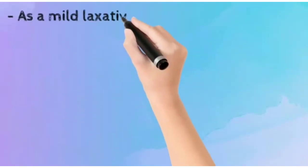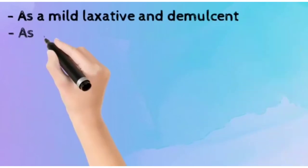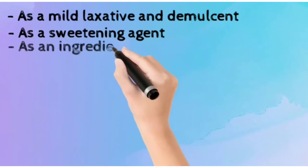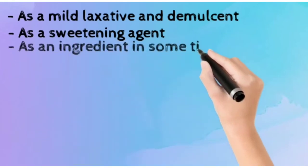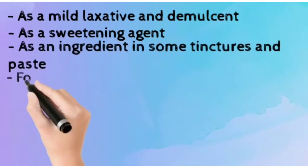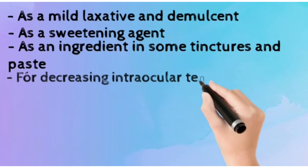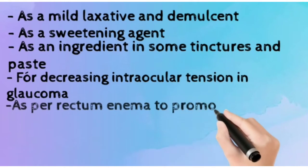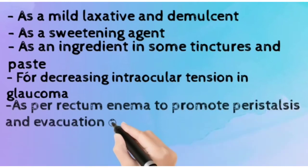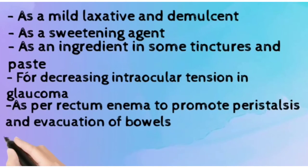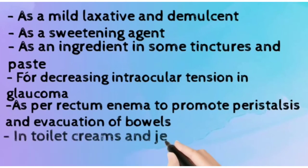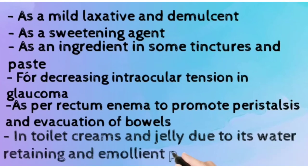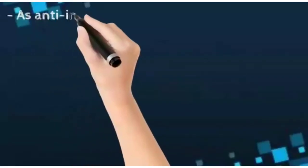Glycerine is used as a sweetening agent, as an ingredient in tinctures and pastes, and for decreasing intraocular tension in glaucoma. It is also used as a rectal enema to promote peristalsis and evacuation of bowels, and in toilet creams and jellies due to its water-retaining and emollient properties.